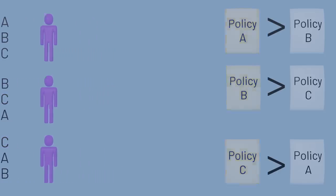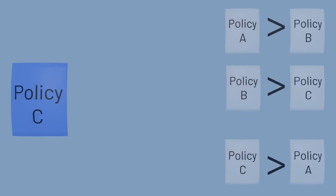This creates an interesting dilemma. Imagine policy C were the current policy in our society, and we held a vote on whether to switch to policy A. Based on voter preferences, we wouldn't switch. Our society thinks policy C is better than policy A.